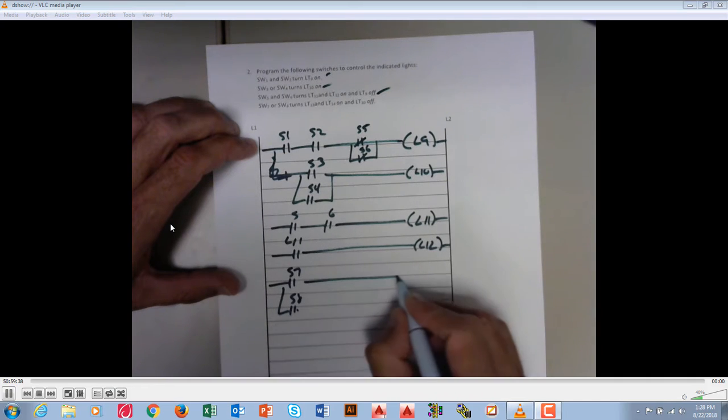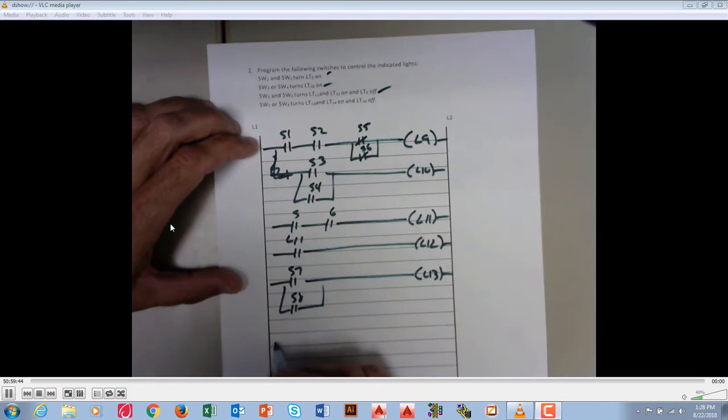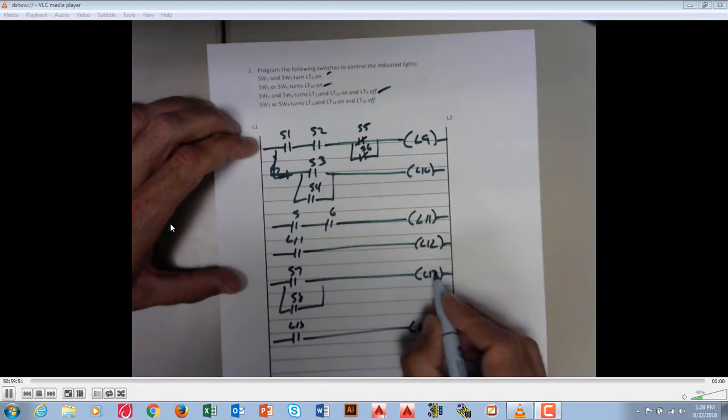Switch 7 or switch 8 turns on light 13 and light 14. So once again, I could have light 13 turning on light 14, because when this one turns on, that closes and that comes on.